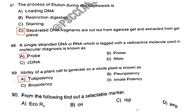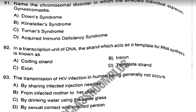Question number 91. Name the chromosomal disorder in which the affected individual expresses gynecomastia. The answer is Klinefelter syndrome. Question number 92. In a transcription unit of DNA, the strand which acts as a template for RNA synthesis is known as? Answer is Option D: Template strand.